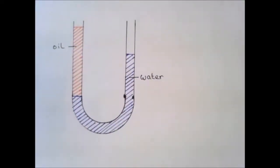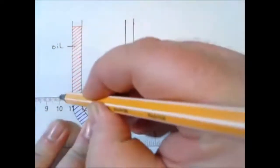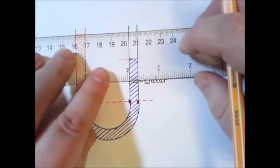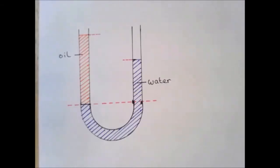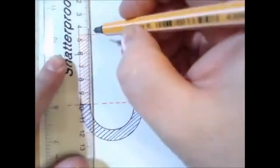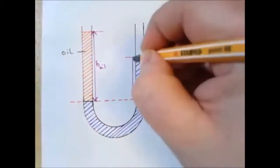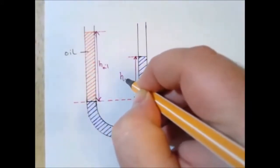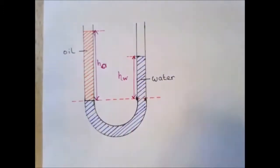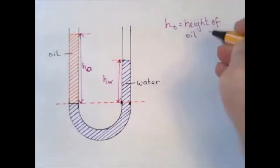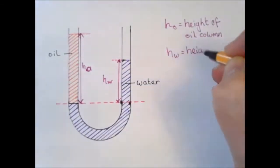Notice they don't mix because oil and water do not mix. The relevance of this line will become obvious in just a couple of moments, but this is how we define the height of the oil column, which I will call HO, and this is the height of the water column, HW. So HO is the height of the oil column and HW is the height of the water column.